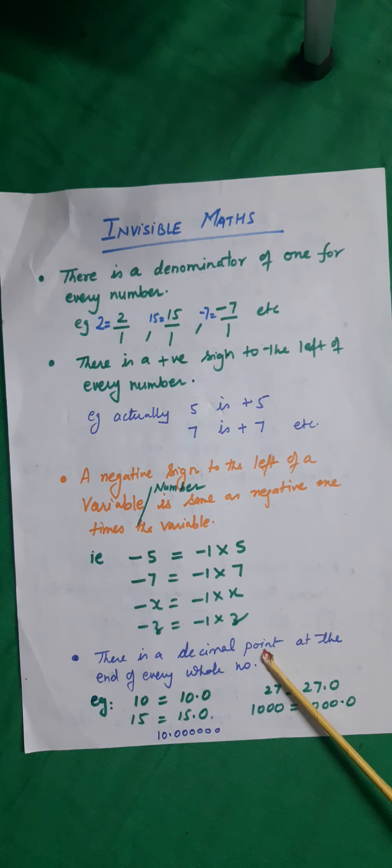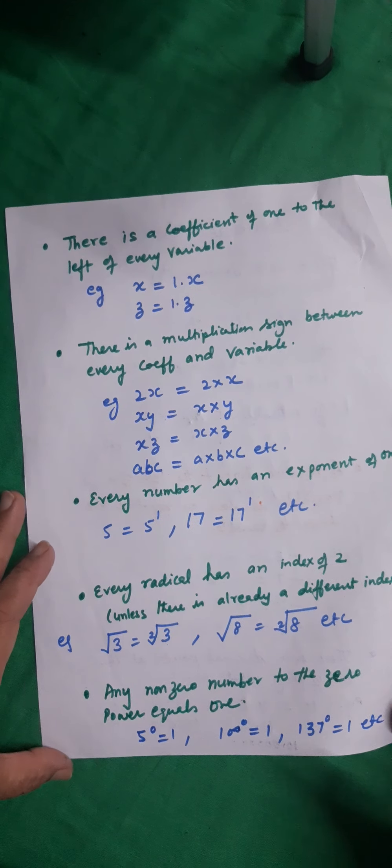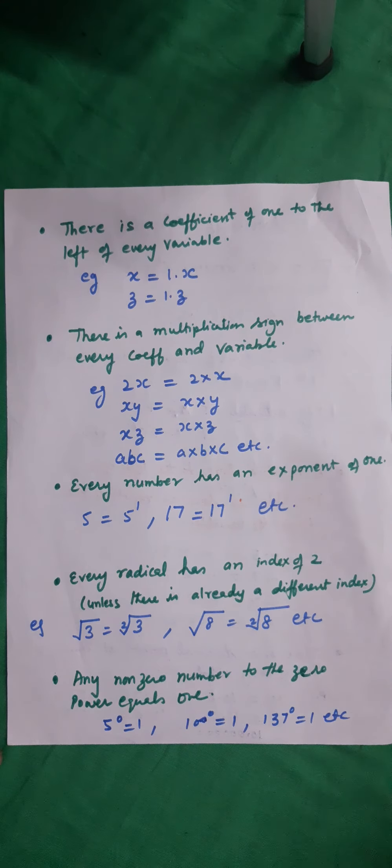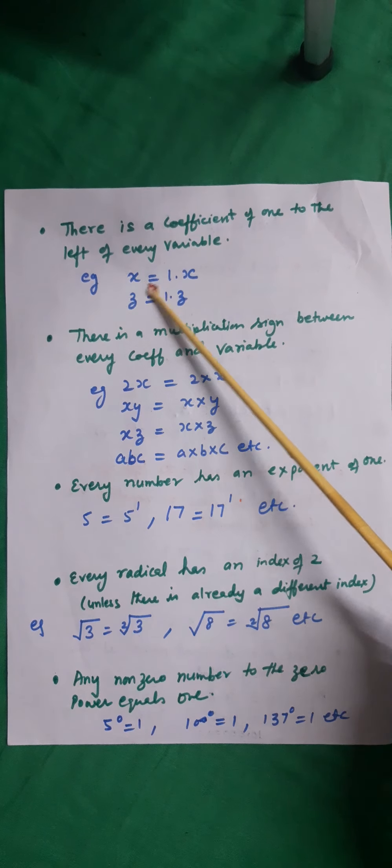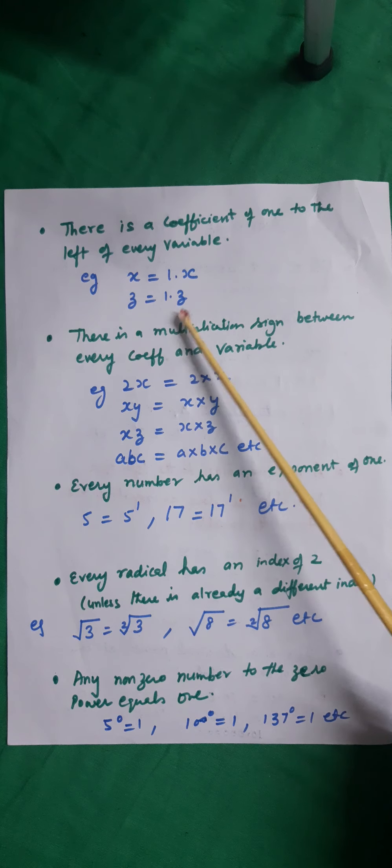Next, there is a coefficient of 1 to the left of every variable. That means if I have x, x can always be expressed as 1 into x. z is equal to 1 into z.